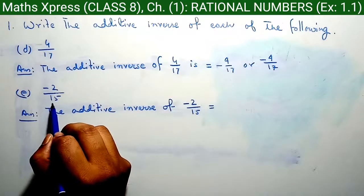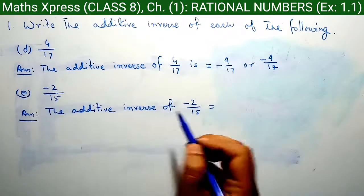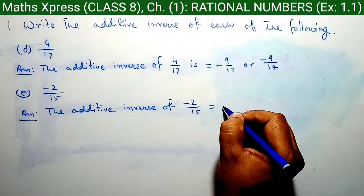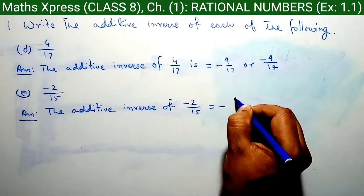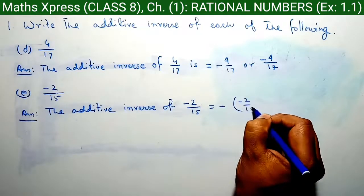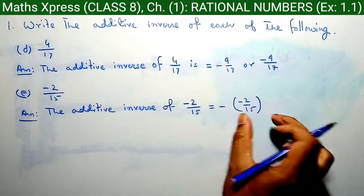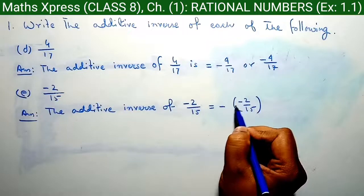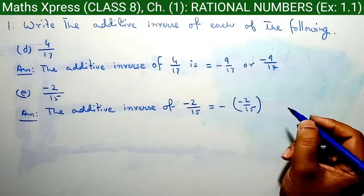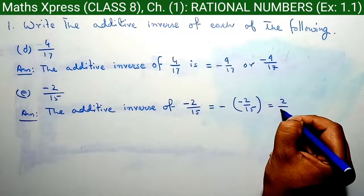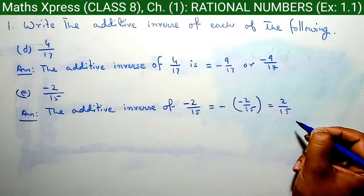Question E: minus 2 by 15. The additive inverse of minus 2 by 15 is equal to minus of minus 2 by 15. When we open the bracket, this minus and this minus become plus. So, the answer is 2 by 15.